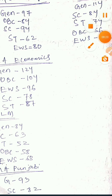Let's see another subject. For MSc Life Science Biochemistry: the general cutoff is 220, SC is 187, ST is 189, OBC is 212, and EWS is 193. Please ignore my background noise.